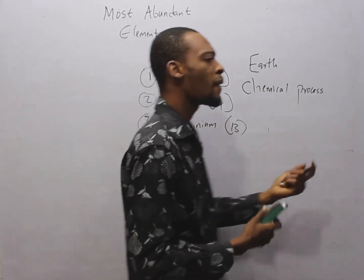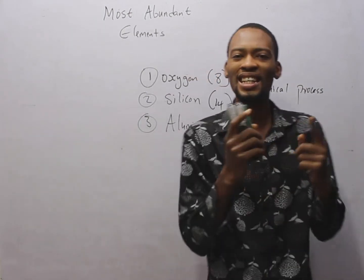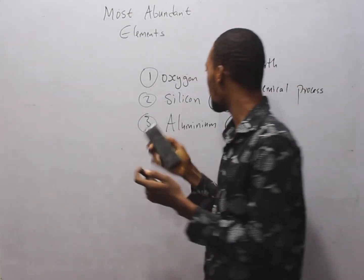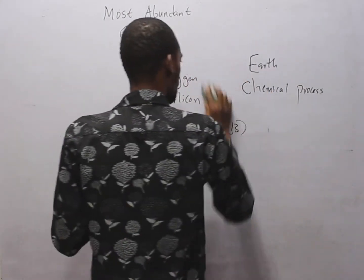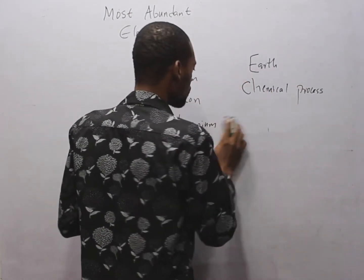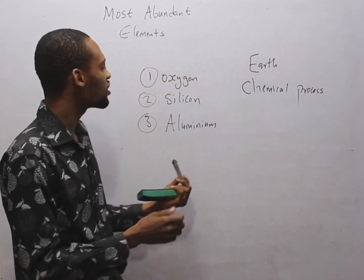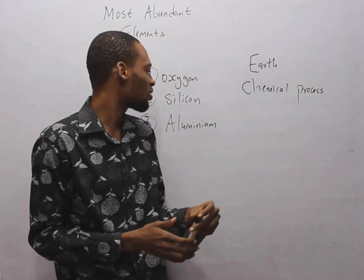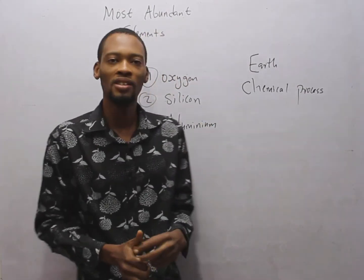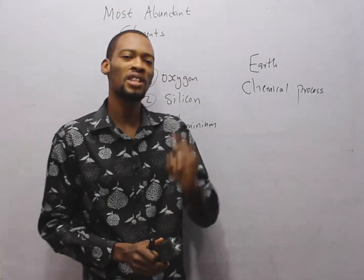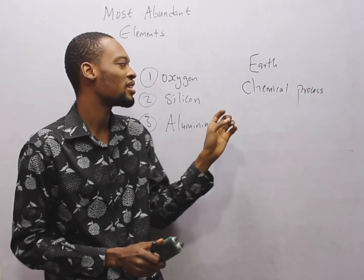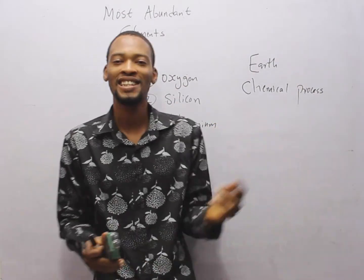So these are the top three most abundant elements on earth. Therefore, oxygen, silicon and aluminium are the three most abundant elements on earth.